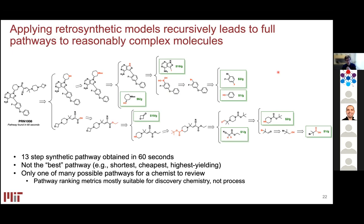With a one-step retrosynthesis model, we can apply it recursively to generate multi-step routes. Using search algorithms to handle the explosion of possibilities, we can map from a complex molecular structure back to simple, purchasable starting materials. An example from a couple of years ago showed the model producing a 13-step synthetic pathway in about one minute — with no guarantee it's optimal, but it provides a pathway consistent with the literature that a chemist can then review.